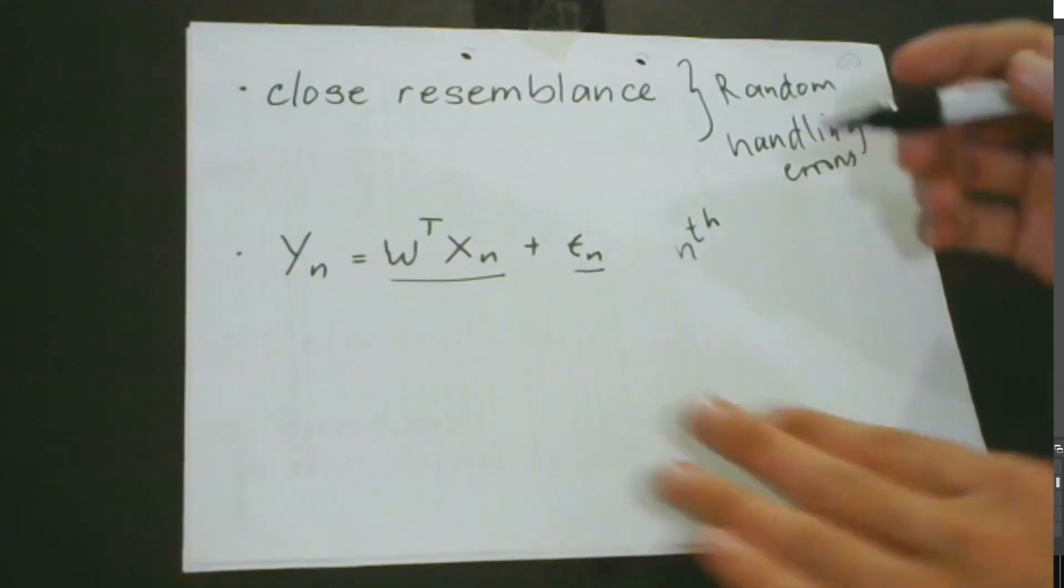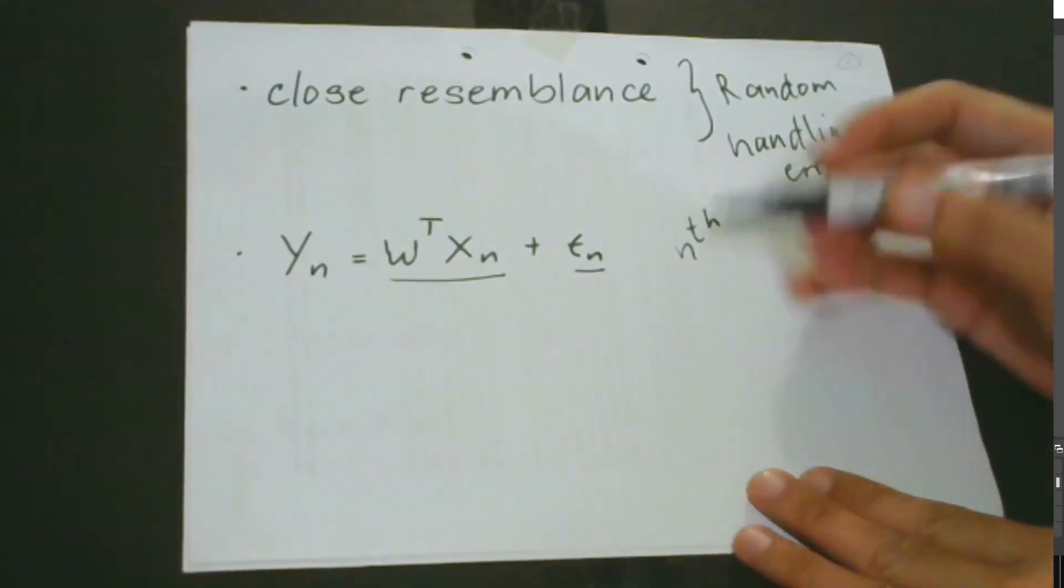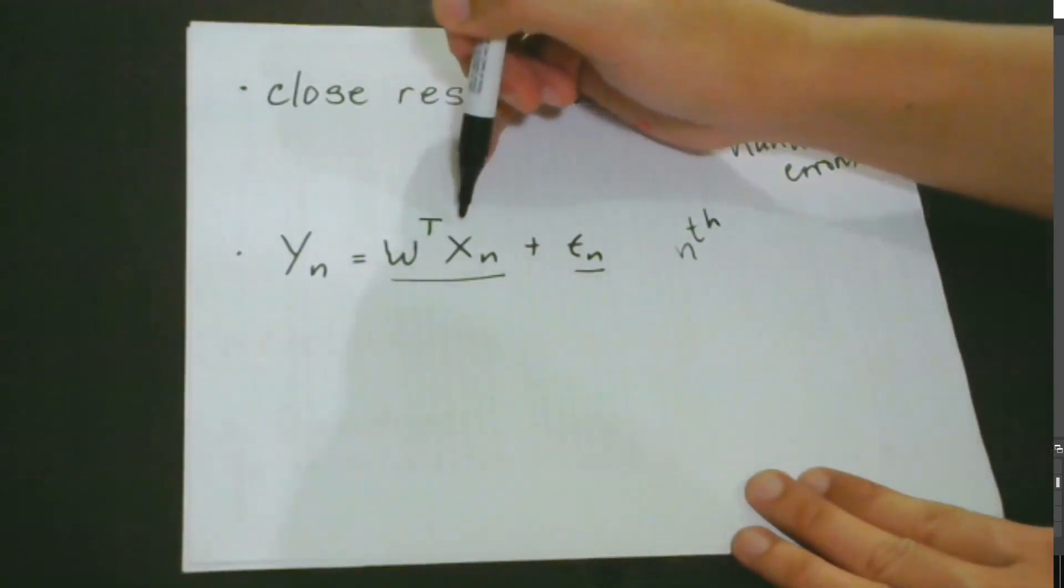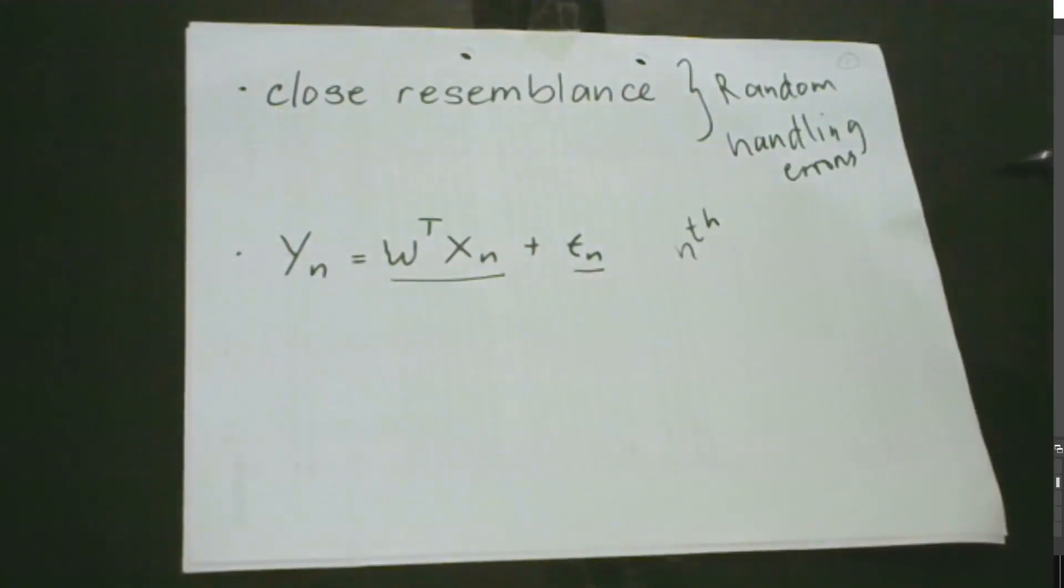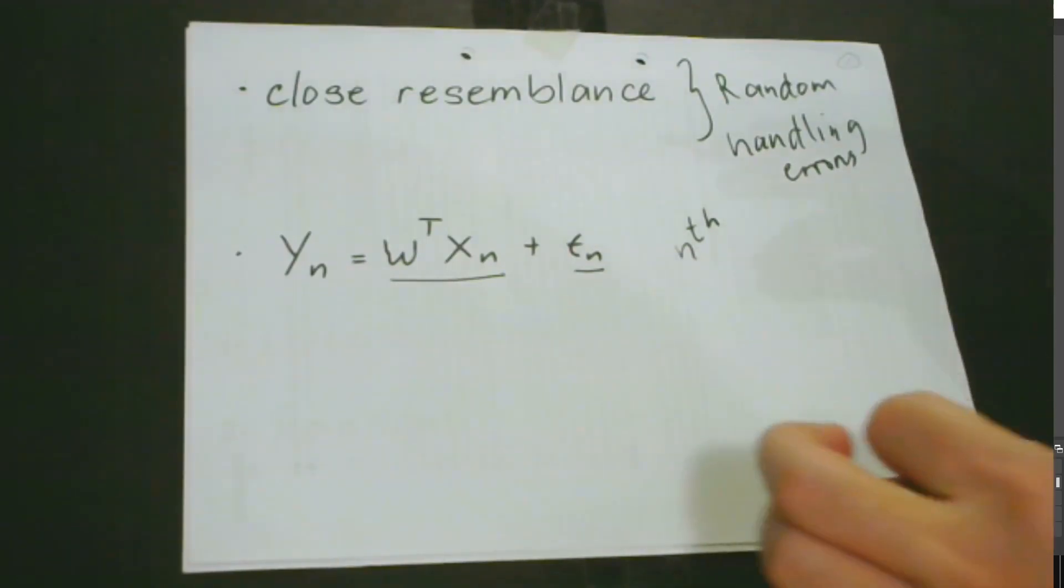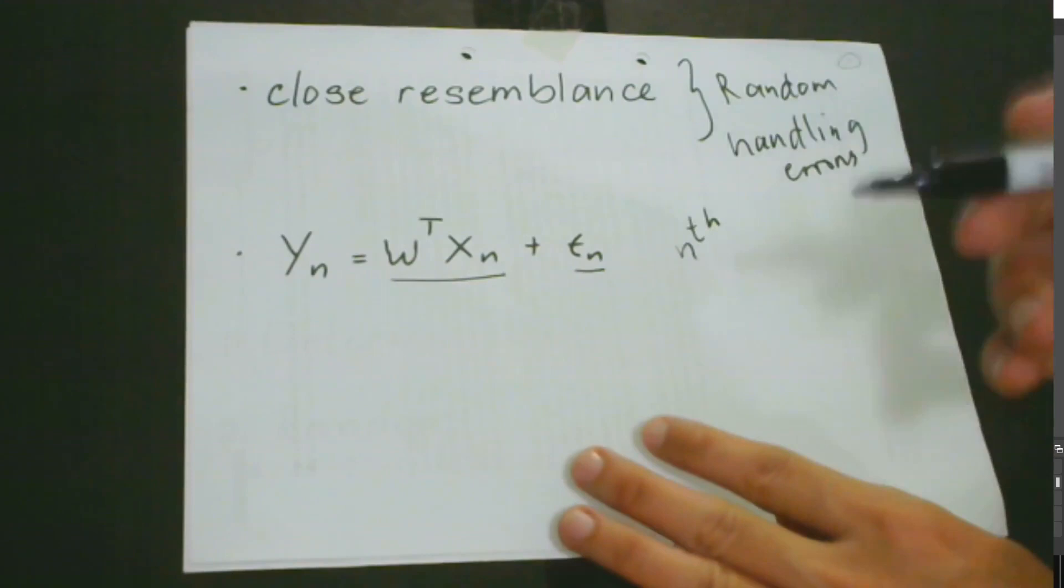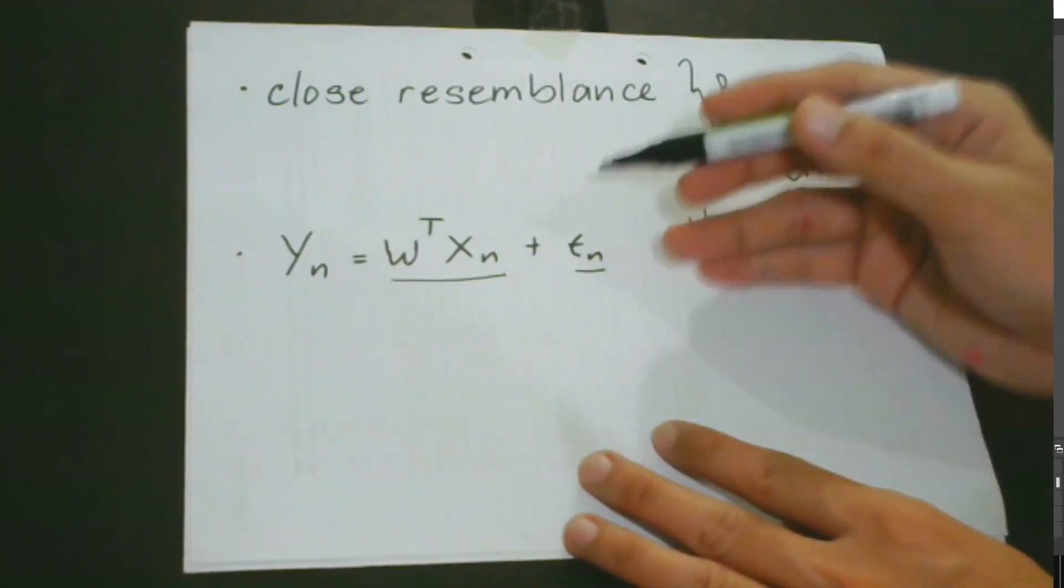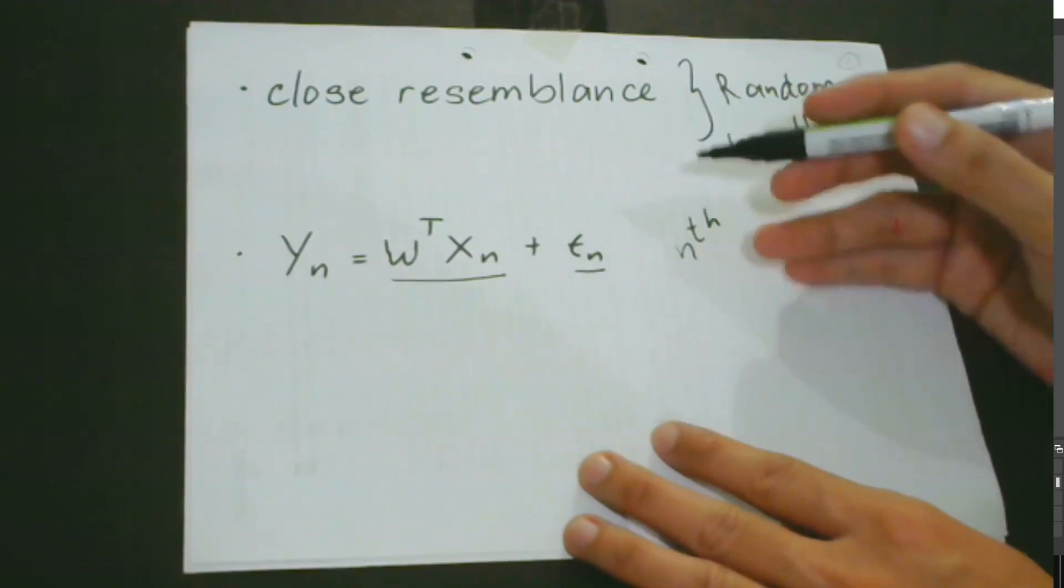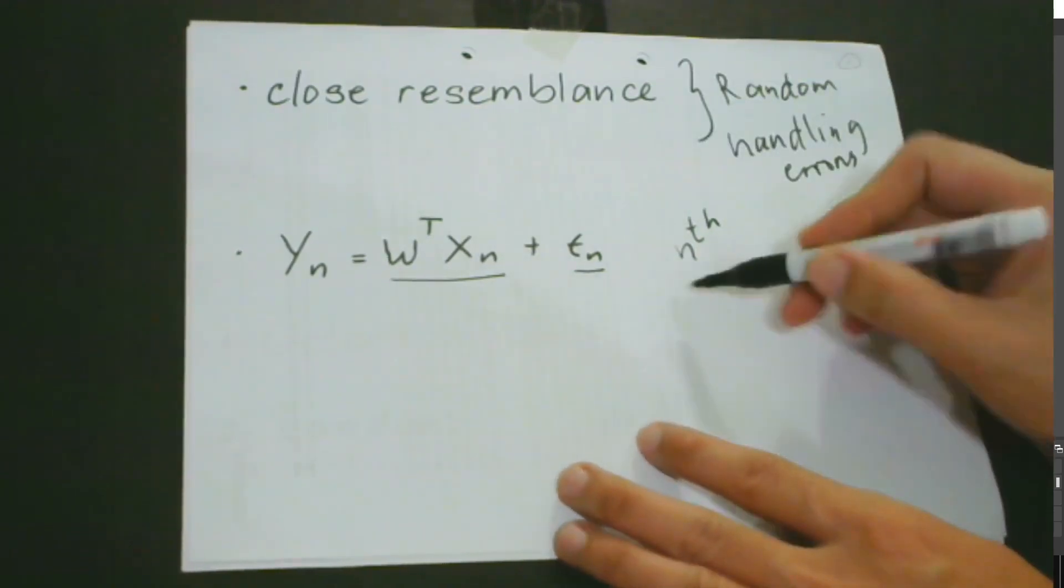Now, after we are done with the first part, the next decision is actually really very crucial. What makes this one really very crucial? What we have to decide is the distribution of the random variable.